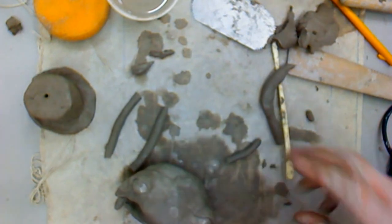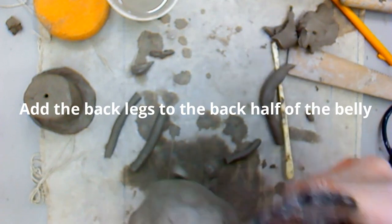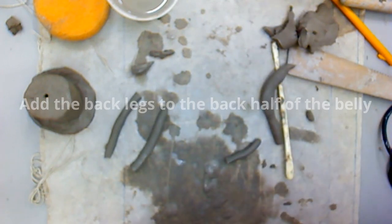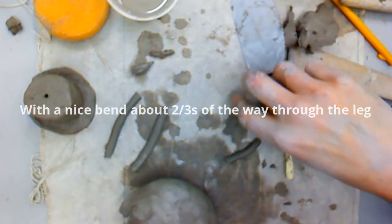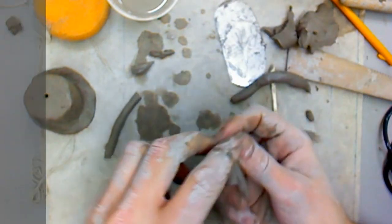Once I feel satisfied with my front legs, I'm going to do the same thing. Here I am in the video, scratching where the back legs are going to be. It's going to be on the back side of the torso, sort of right behind, or a little ways behind the eyes.